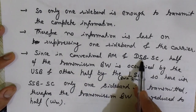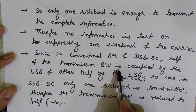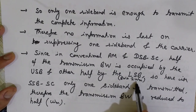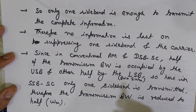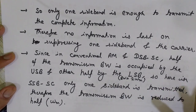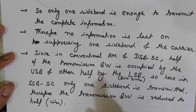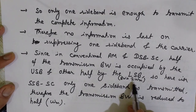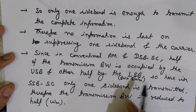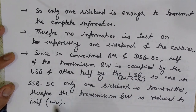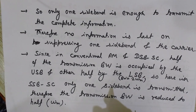There is also bandwidth saving. In conventional AM and DSB-SC, the bandwidth occupied is 2ωm — half occupied by one sideband and half by the other. If we transmit only one sideband, the required bandwidth is reduced to half: only ωm. This is another advantage of SSB-SC — both power saving and bandwidth saving.